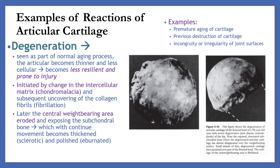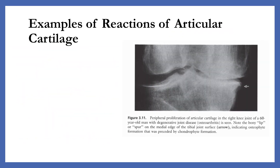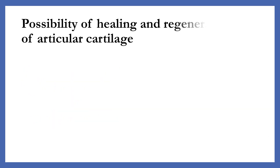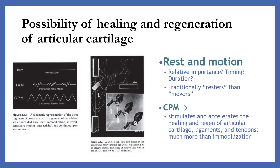Examples include premature aging of cartilage, previous destruction of cartilage, and incongruity or irregularity of joint surfaces. The next example is peripheral proliferation. The rim is covered by a type of perichondrium that is continuous with the synovial membrane. The degeneration of the central area causes the rim to grow thicker, initially forming cartilage or chondrophyte formation, which subsequently ossifies to form osteophyte formation. There is also the possibility of healing and regeneration of articular cartilage by rest and motion, and continuous passive motion, which stimulates and accelerates the healing and regeneration of articular cartilage, ligaments, and tendons.